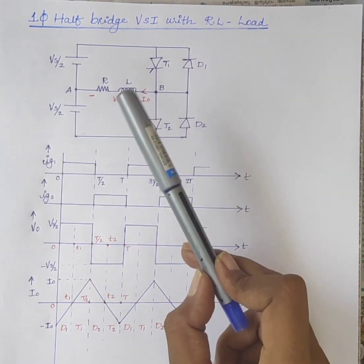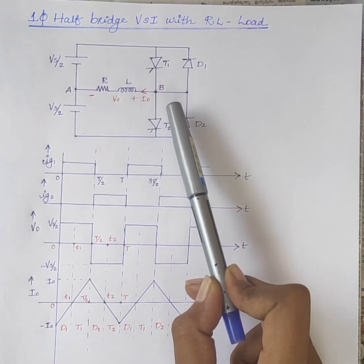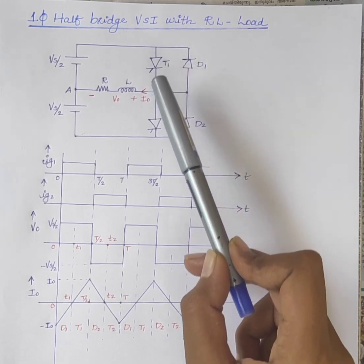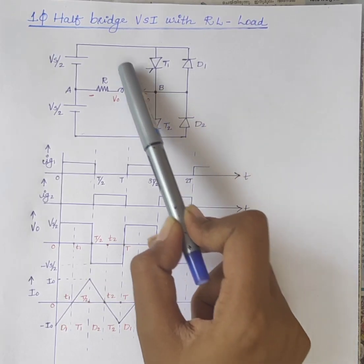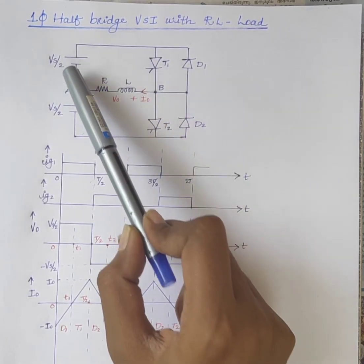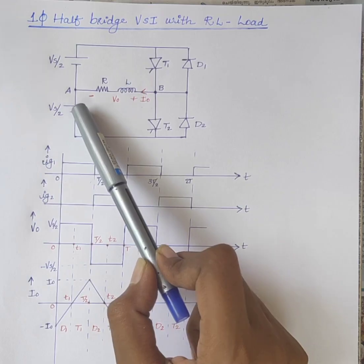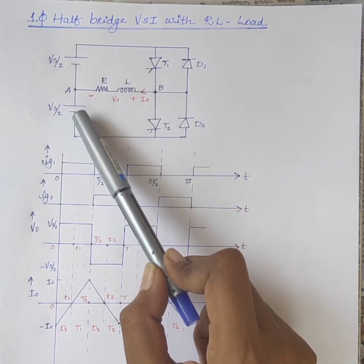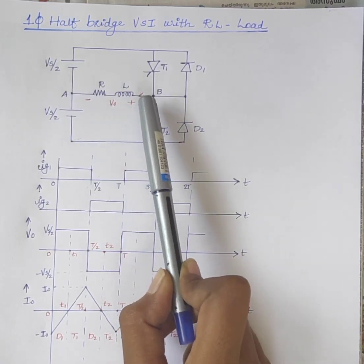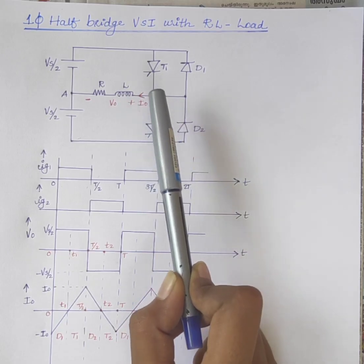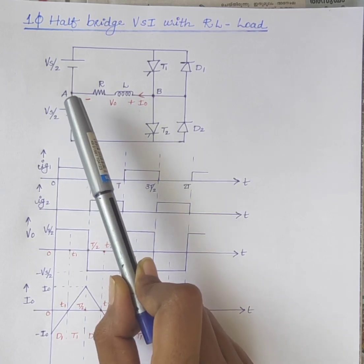The circuit diagram of the half bridge inverter with RL load consists of two thyristors T1 and T2, two feedback diodes D1 and D2, an RL load, and supply voltage. The supply voltage divides into two equal parts, Vs/2 and Vs/2. The RL load is connected between point A and point B, where point B is always considered as positive and point A is considered as negative.